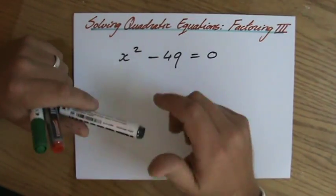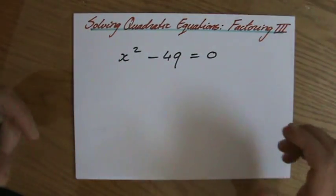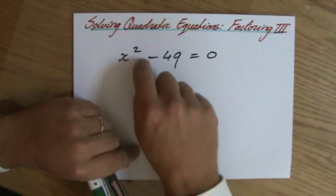And I have to solve it by factoring. So I have to factorize the left side of the equation. It's already equal to 0, it's in the correct order. However,